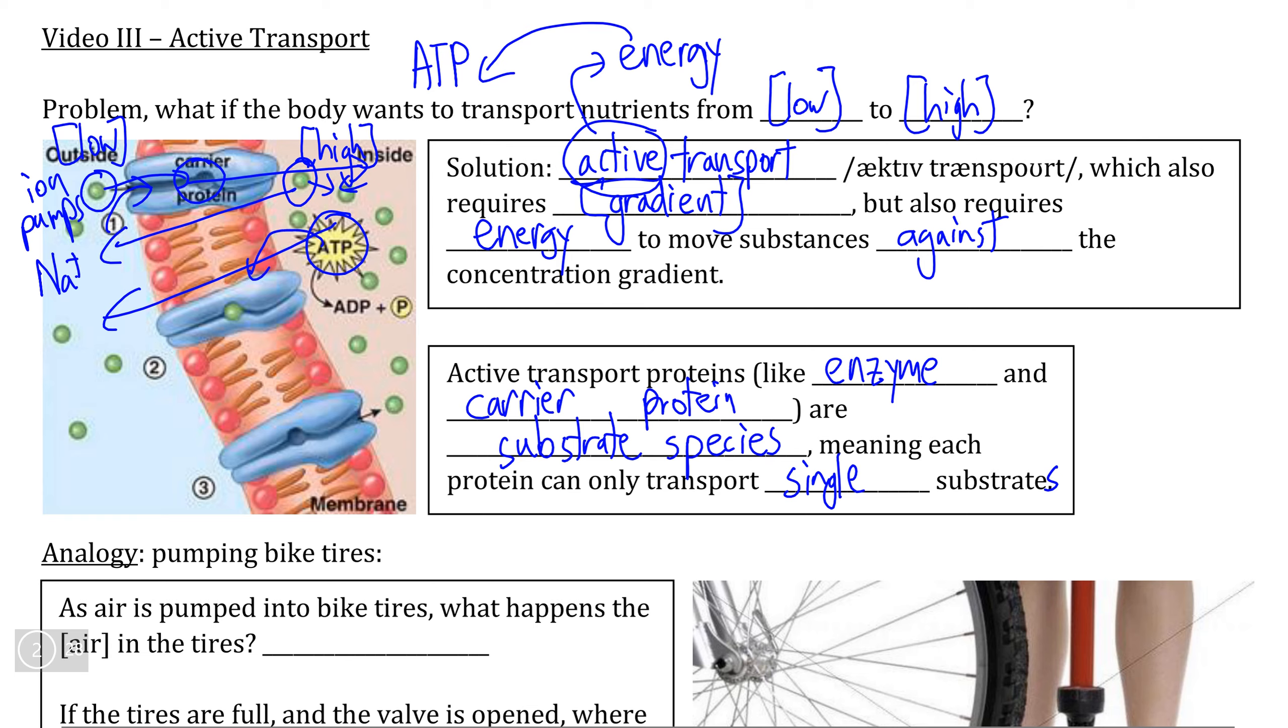This is why most of the time ATP actually needs to react with this transport protein, breaking off one of its phosphates and becoming ADP in order to supply this carrier protein with the energy needed to push these ions against the concentration gradient.